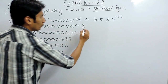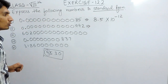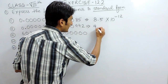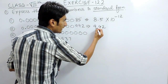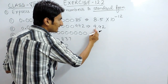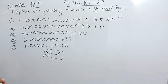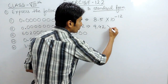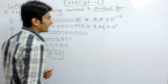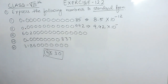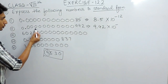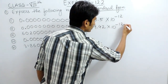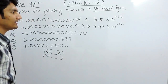Similarly, in the second case, if you want to write this number in standard form, you have to write it as 9.42 so that only one digit is on the left hand side of the decimal. Because you are again shifting the decimal to the right hand side, you have to write 10 raised to the power minus. You are shifting 12 digits, so you write 10 raised to the power minus 12.